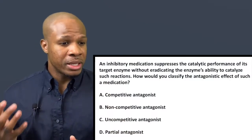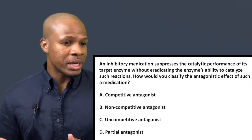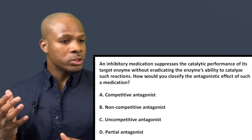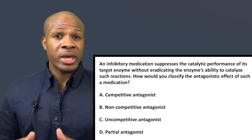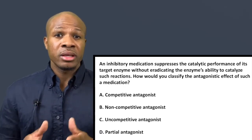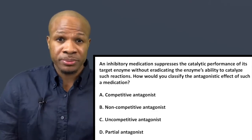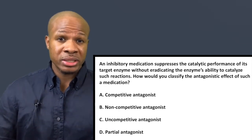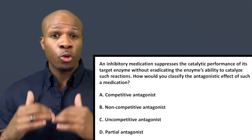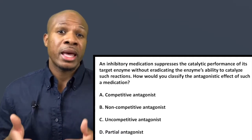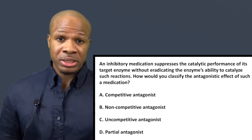Question number one says: an inhibitory medication suppresses the catalytic performance of its target enzyme without eradicating the enzyme's ability to catalyze reactions. How would you classify the antagonistic effect of such a medication? This medication antagonizes a certain enzyme, causing it to not perform up to its capability. It doesn't completely deactivate the enzyme but suppresses the activity enough that the enzyme cannot catalyze reactions as quickly or forcefully as it would have without the medication.